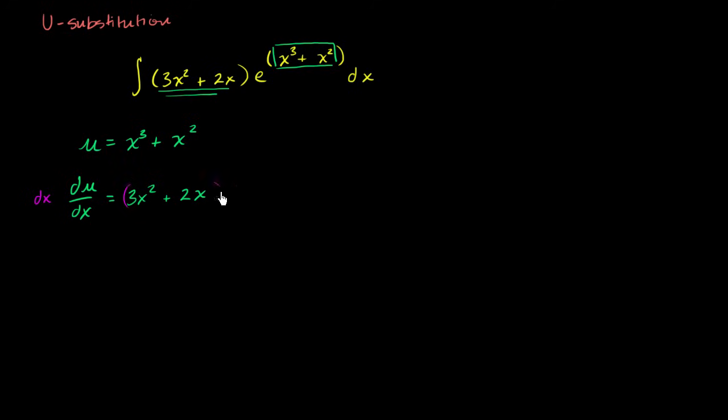So both sides times dx. And so if we were to pretend that there were fractions, and it will give you the correct differential form, you're going to be left with du is equal to 3x squared plus 2x dx. Now why is this over here? Why did I go through the trouble of doing that? Well, we see we have a 3x squared plus 2x. And then it's being multiplied by a dx right over here.